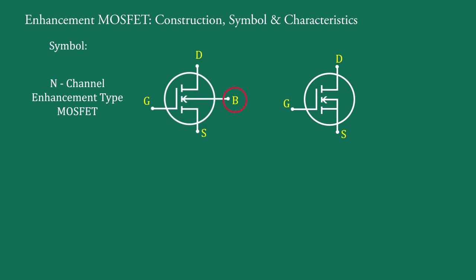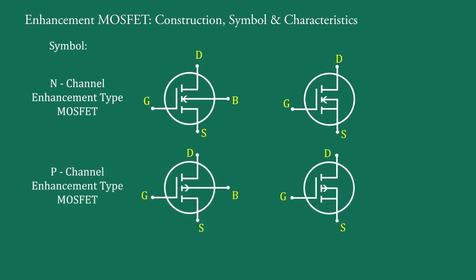This substrate terminal B is internally connected to the source, so it is also symbolized like this. In P-channel enhancement type MOSFET, this arrow is outward direction, so it is drawn like this. In this symbol, the vertical line representing channel is broken. It is indicated that there is no continuous channel like depletion MOSFET.